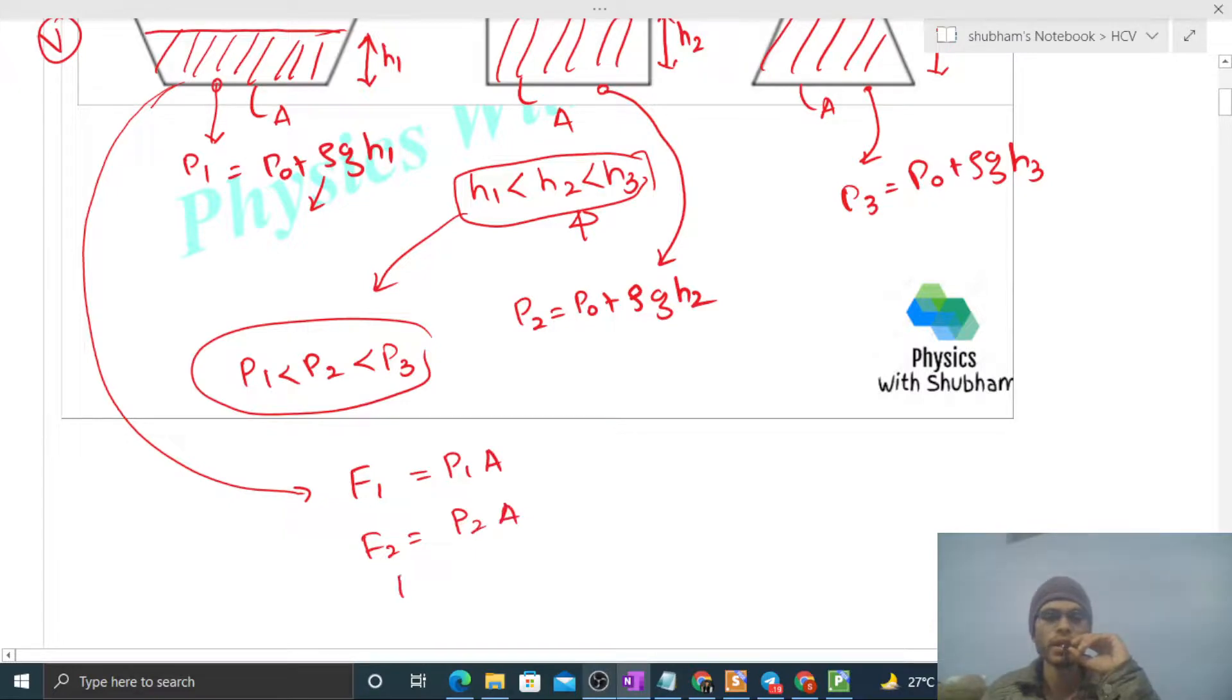And F3 will be p3 times area. Now the area is the same for all, the base area. So we can say F1 will be less than F2 will be less than F3. So F3 will be maximum, which means maximum in vessel C.